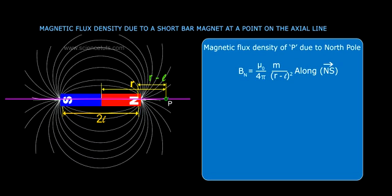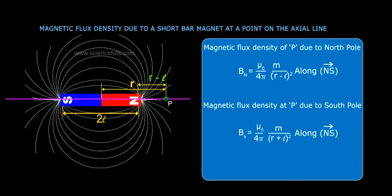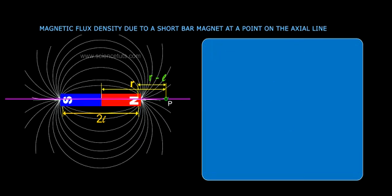Magnetic flux density at P due to the south pole Bs is equal to μ₀/4π × m/(r+l)² along NS. Resultant magnetic flux density B equals Bn minus Bs.